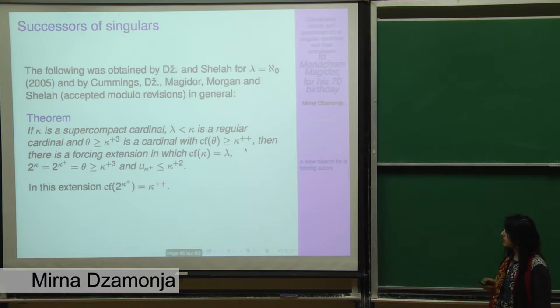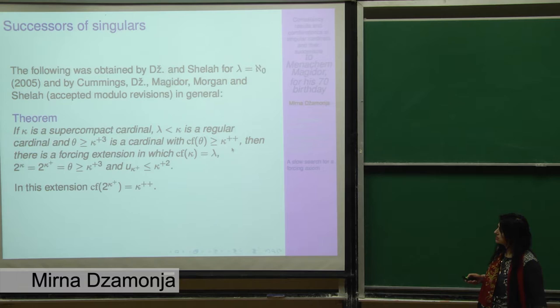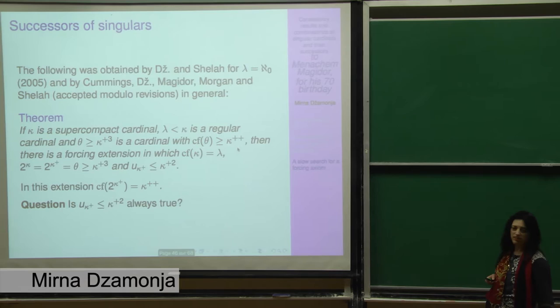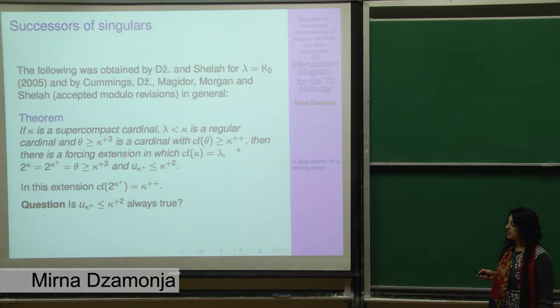One important part of what you can do with prickly forcing doesn't work with Radin forcing. Namely, in this paper we have used the fact that the direct extension in prickly forcing is kappa closed. This is not true with Radin forcing. That was a major block, and actually Menachem gave an idea of how to overcome it. Then we all worked very hard on this paper to get it to this present shape. I would like to notice that in this extension, the cofinality of 2 to the kappa plus is kappa double plus. In fact, what we have in these papers always is that the universality number u corresponds to the cofinality of 2 to the kappa plus. And actually, this means also that the cofinality of 2 to the kappa is equal to kappa double plus. And you will see by a result that I will present in a minute, that this is quite important because, for example, if we had that the cofinality of 2 to the kappa was kappa plus, we could say much more.